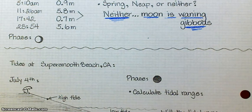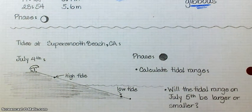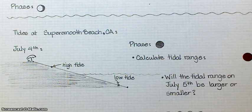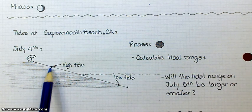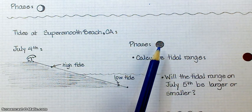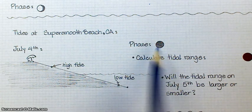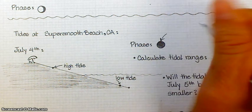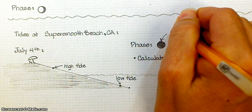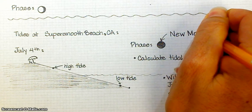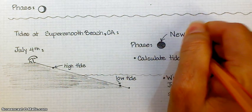All right, let's go to the next scenario. Your tides at Supersmooth Beach, California. Pointed out your high tide right there, your low tide right there. Really important clue right here: what phase of the moon is that? This indicates a new moon. So if it's a new moon, what type of tidal range are we having? This is going to be a spring tide.